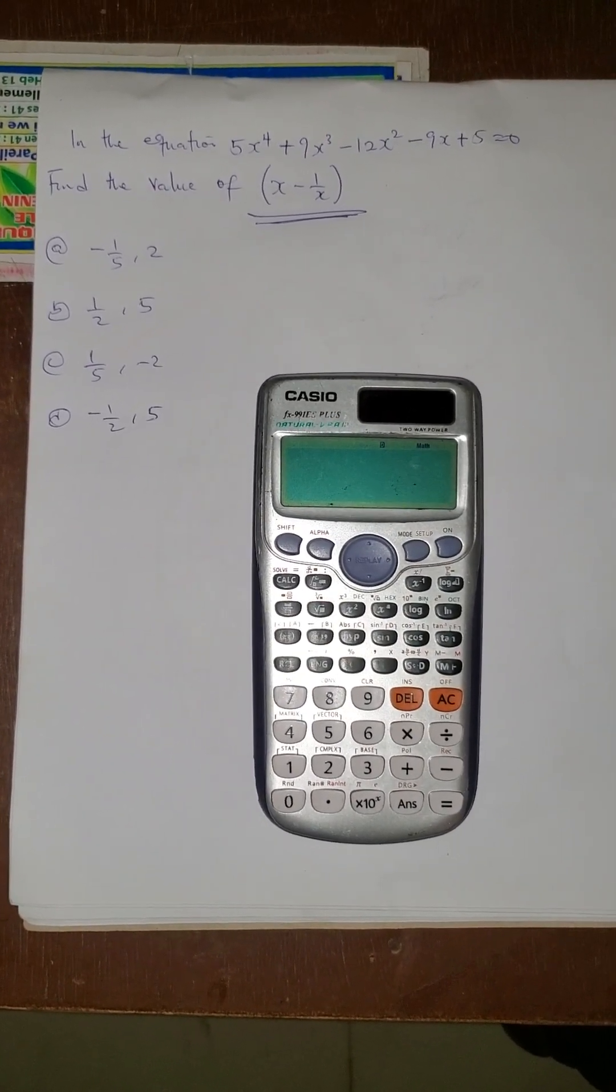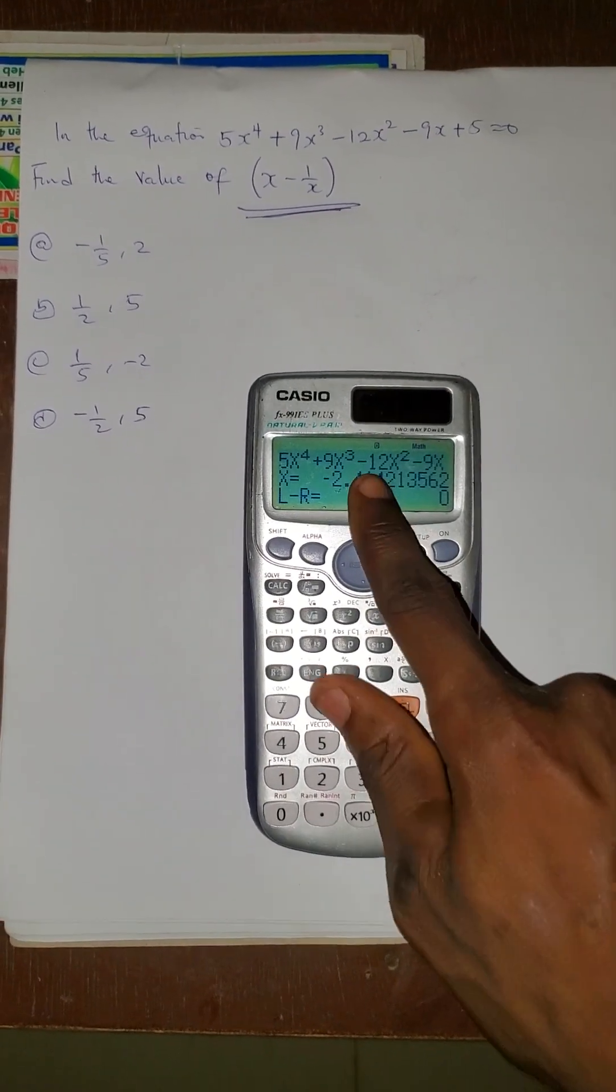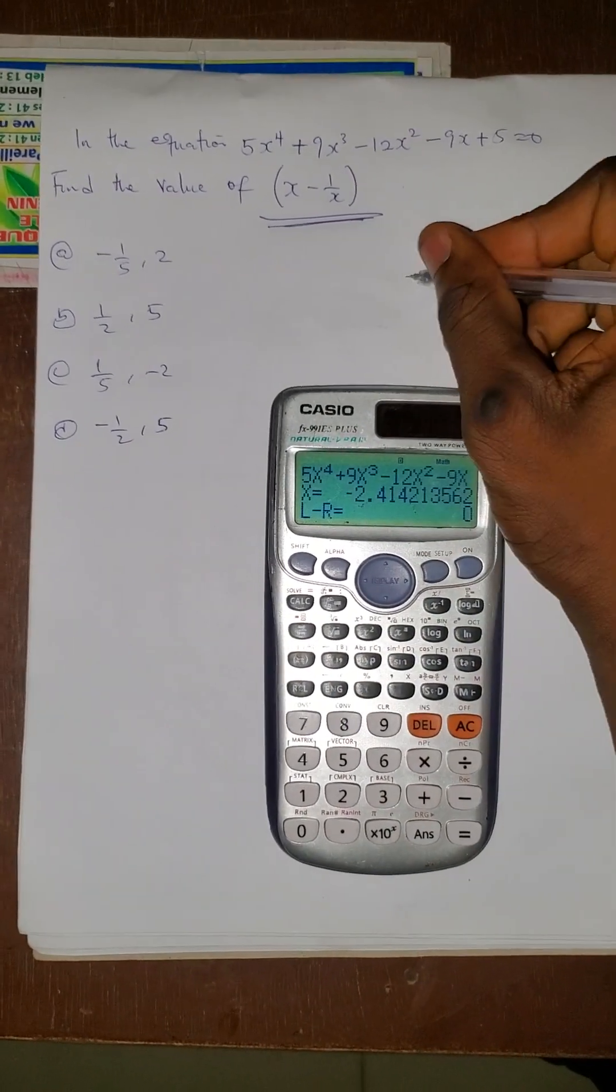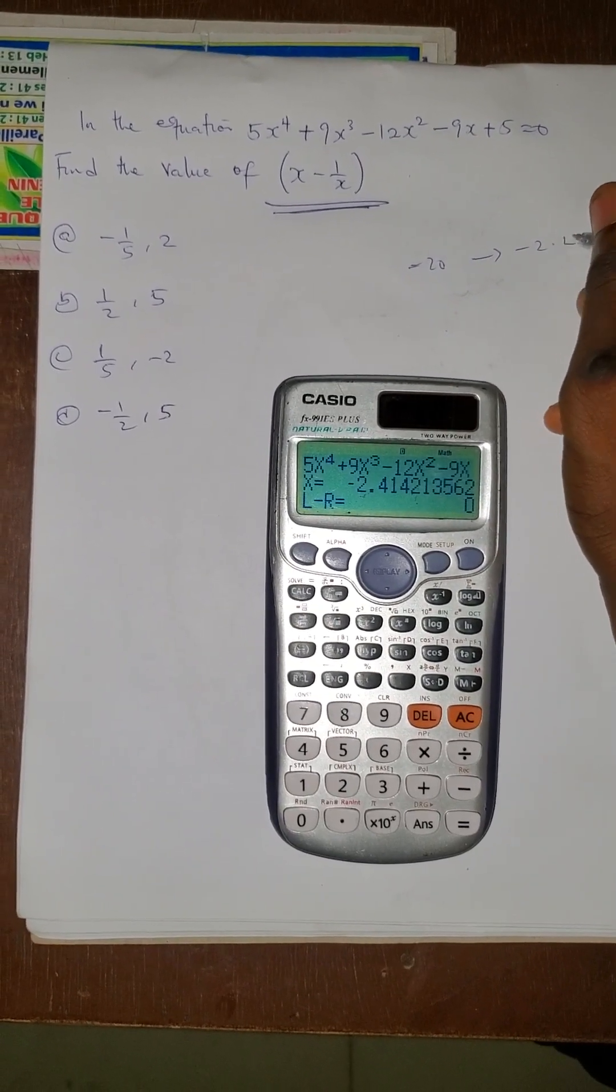Press equals to. Now you can see that when I press -20, it gave me the value of x to be -2.412.